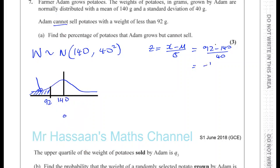So Z equals minus 1.2 — that's the standardized value. So we want to find this area here. Unfortunately, our table for the normal distribution, the Z tables, do not go to negative values. They only have positive values.